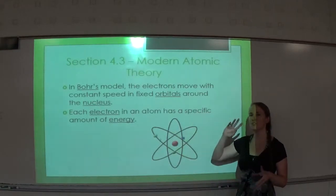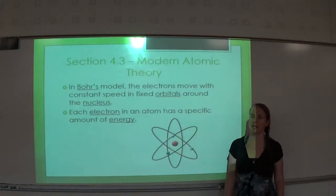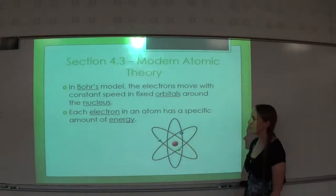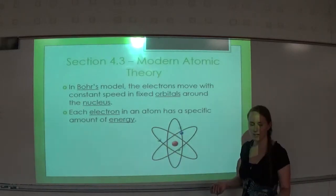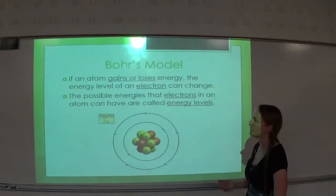In Bohr's model, instead of just saying the electrons are somewhere in the electron cloud, like Rutherford's model says, we are putting them in specific orbitals, kind of like planets going around the sun, but not entirely the same.